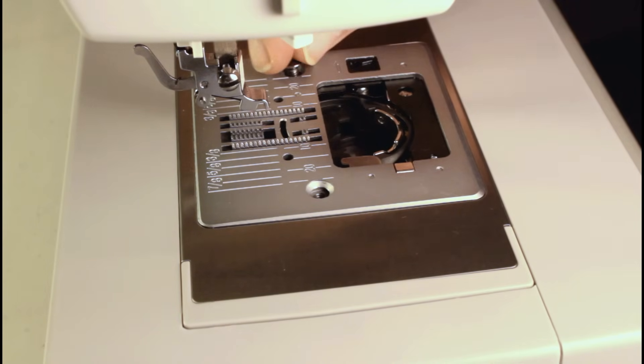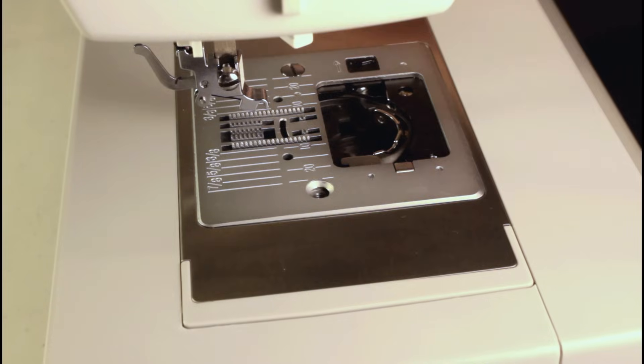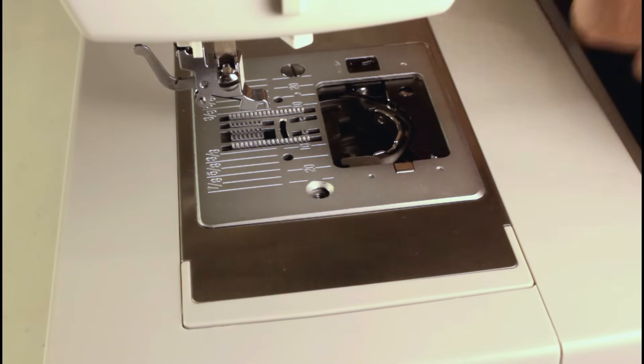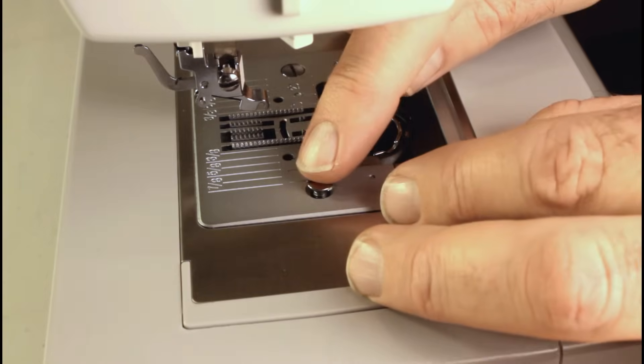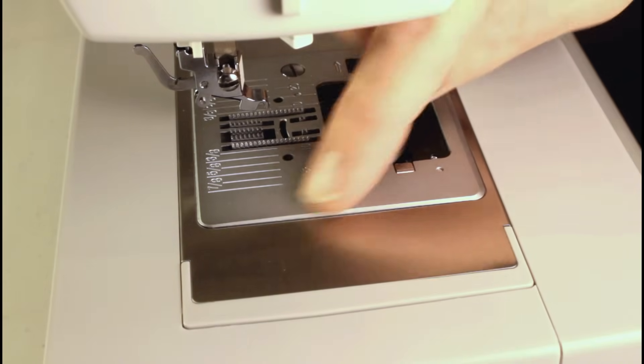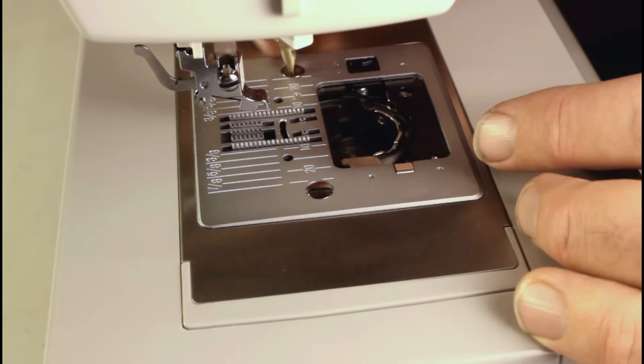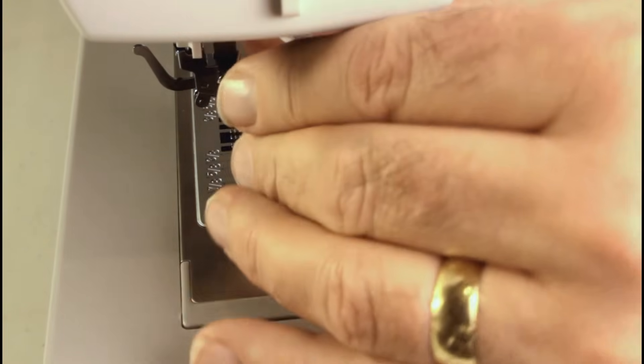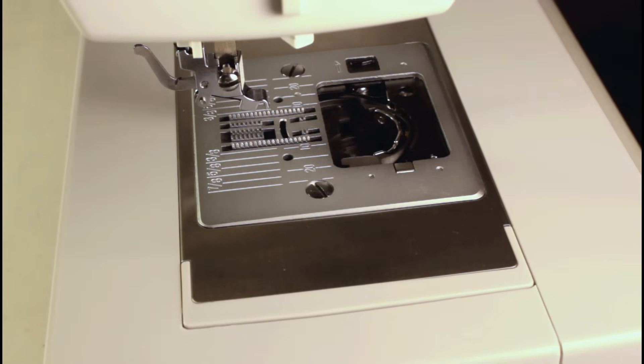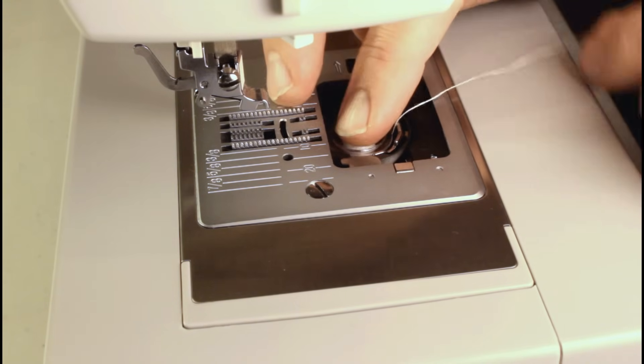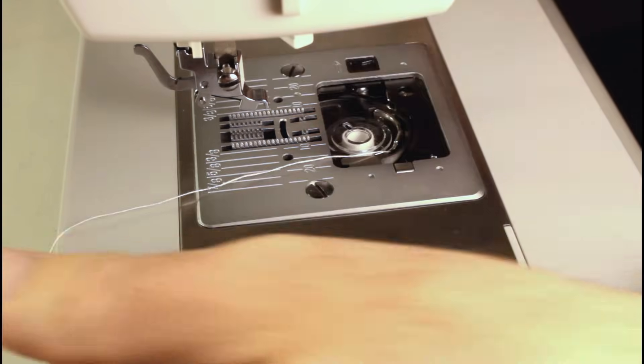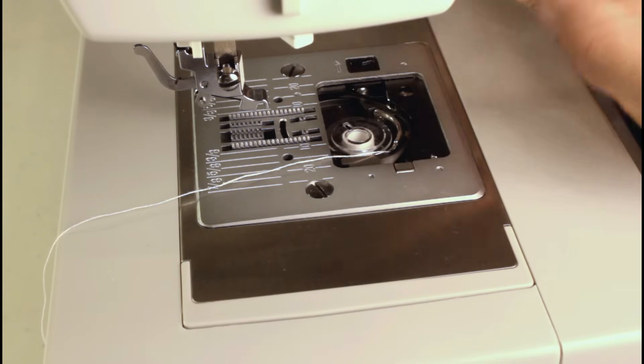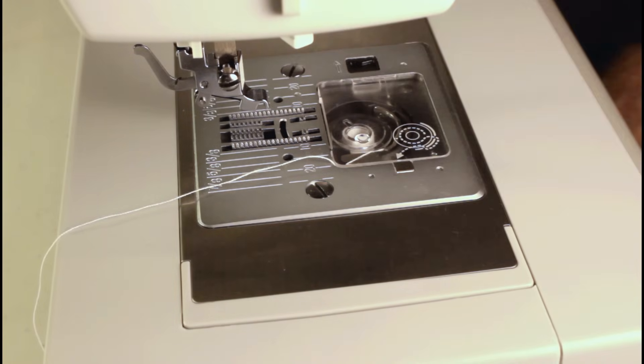Put our screws back in. You don't need to over tighten it. Just get it snug. Then you can insert your bobbin back in. Put your case back on. And test your stitches.